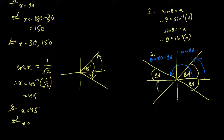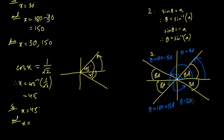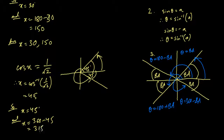For the fourth quadrant, the rule is: angle = 360° minus the basic angle. For the third quadrant, the rule is: angle = 180° plus the basic angle. So for cos x = 1/√2 in the fourth quadrant: x = 360° − 45° = 315°. Therefore the answers are x = 45° and x = 315°.